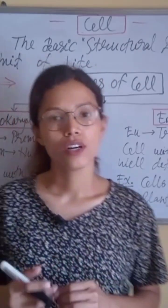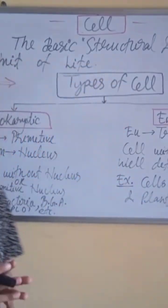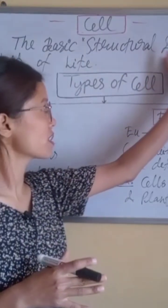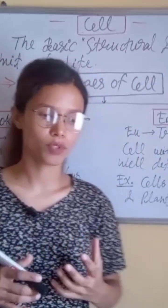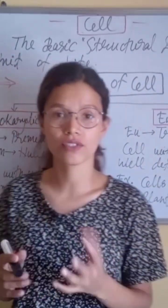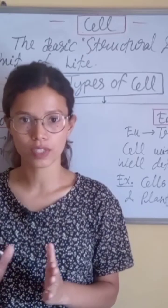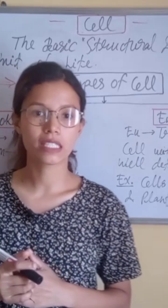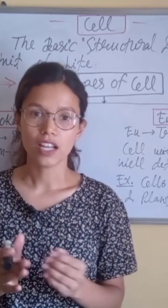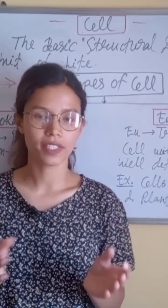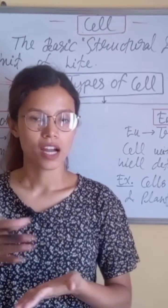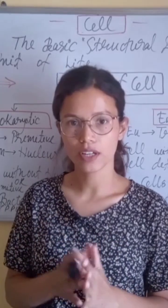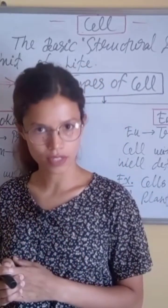So let's get started. First of all, what is cell? Every time we talk about cell, we talk about the structural and functional unit, or we call it the basic structural and functional unit of life. Why we call it structural and functional? Because all the living organs are made up of cell and all the vital activities which are essential for life are done within a cell. That's why we call it the structural and functional unit of life, or fundamental unit of life.